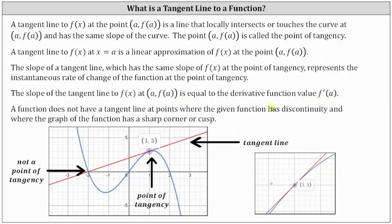A function does not have a tangent line at points where the given function has discontinuity and where the graph of the function has a sharp corner or cusp. And we'll talk more about this later.